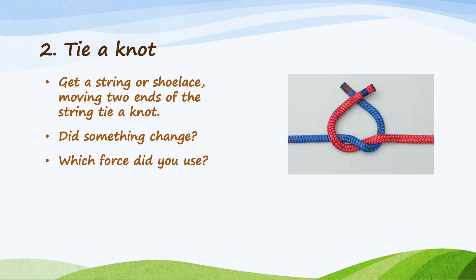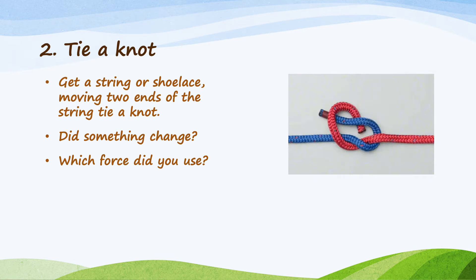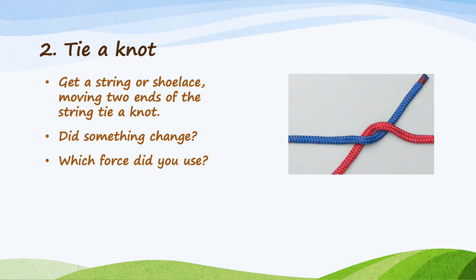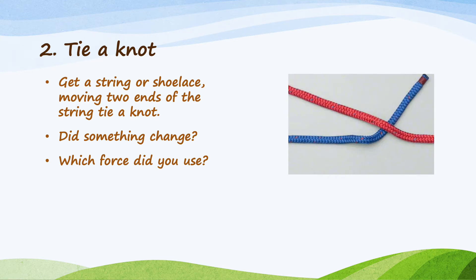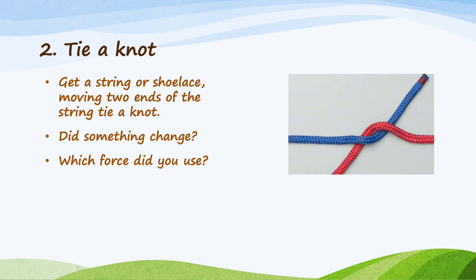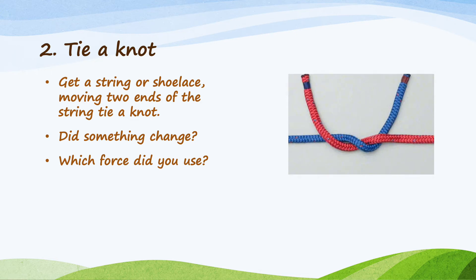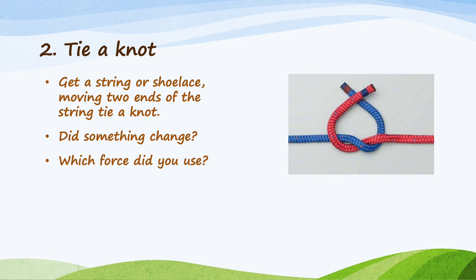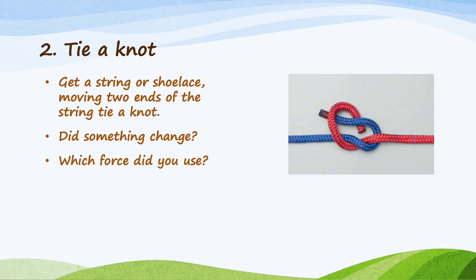Experiment number two: tie a knot. For this, you need a string or shoelace. Remember, you have to move both ends of the string to tie a knot — you can also get help from an adult. Did you notice something changed in the object? Yes, the object is knotted now. The position of the object has changed because of the force. Think — which force did you use? Did you push the strings to make a knot, or did you use pull force to tie a knot?